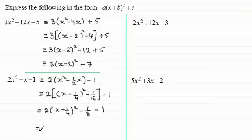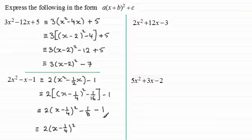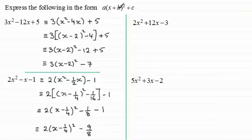Finally cleaning this up, we get 2 lots of x minus a quarter all squared, then minus one eighth minus one whole one. It's better to think of the 1 as eight eighths, so minus one eighth minus eight eighths gives minus nine eighths — keep it as a top-heavy fraction. With this one: A would be 2, B would be minus a quarter, and C would be minus nine eighths.